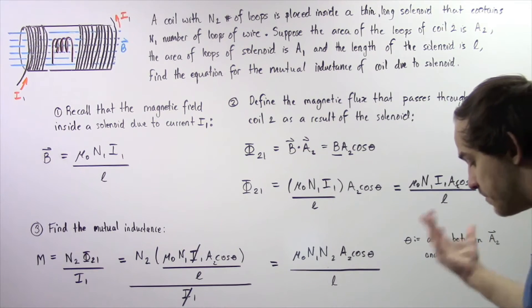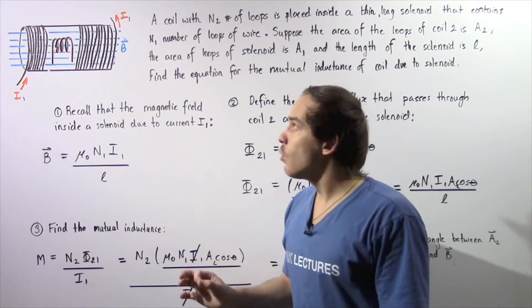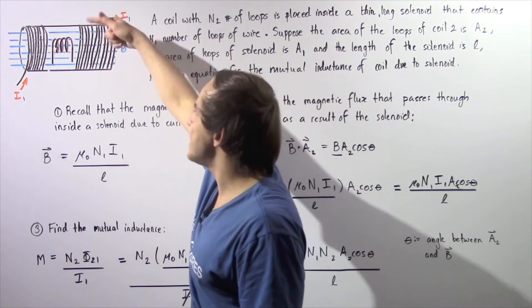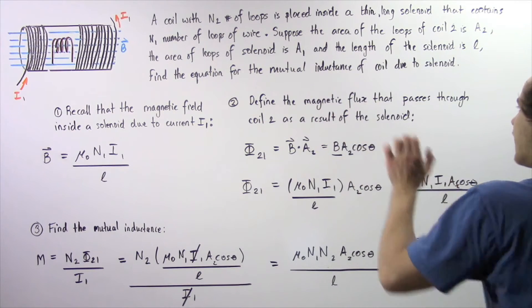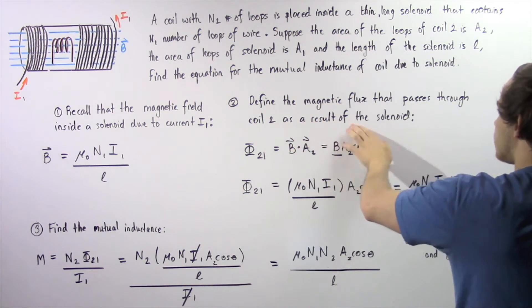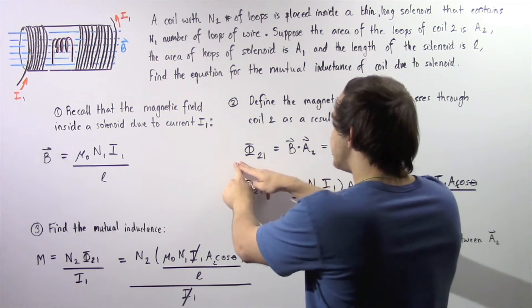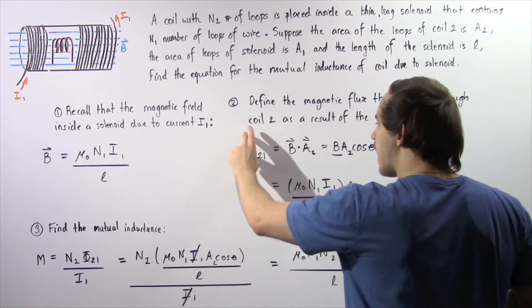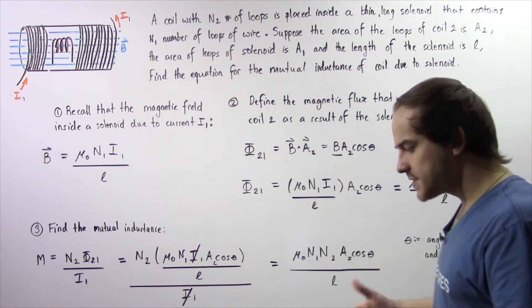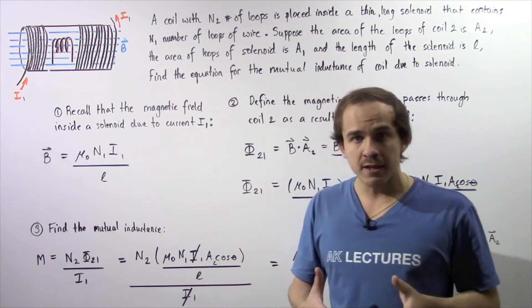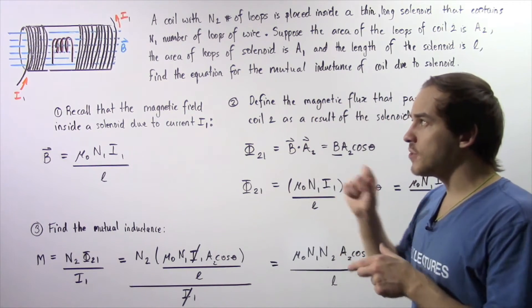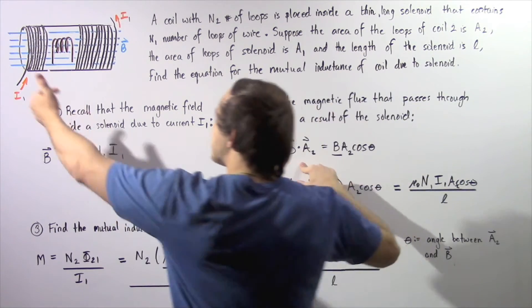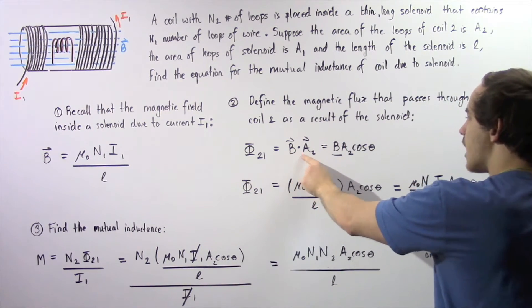In step number 2, we want to define the magnetic flux traveling through the loops of coil number 2 as a result of the solenoid. We define this magnetic flux as Φ₂₁. By definition of magnetic flux, the magnetic flux is equal to the dot product of the magnetic field passing through the loops and the area of those loops. The area of the loops in coil 2 is given by A2 and the magnetic field is B, so Φ₂₁ = B · A2.